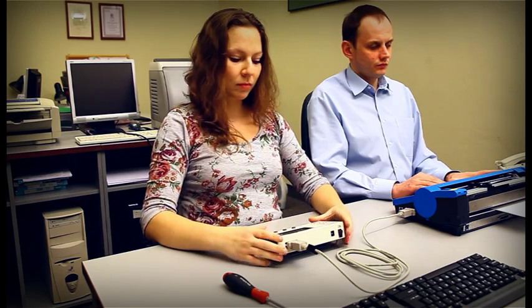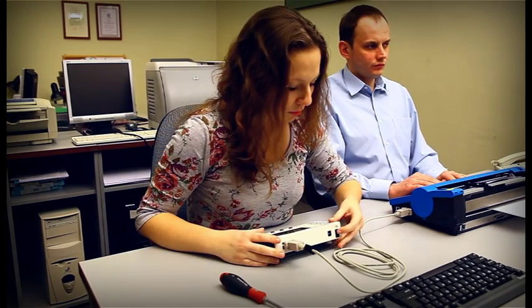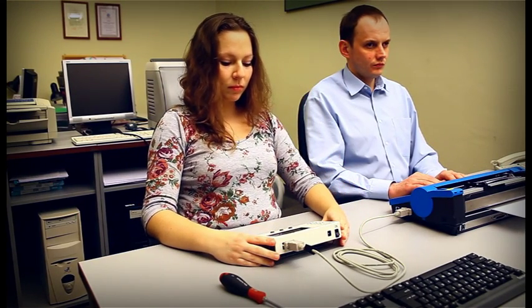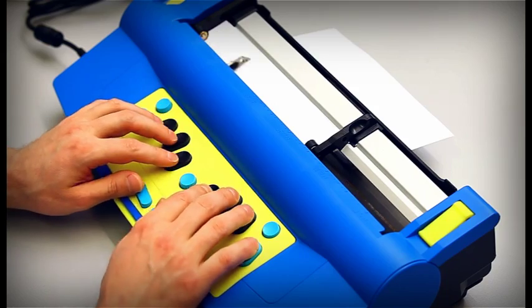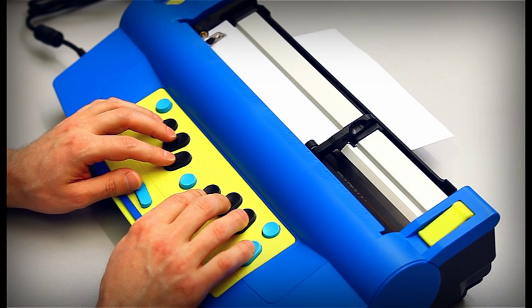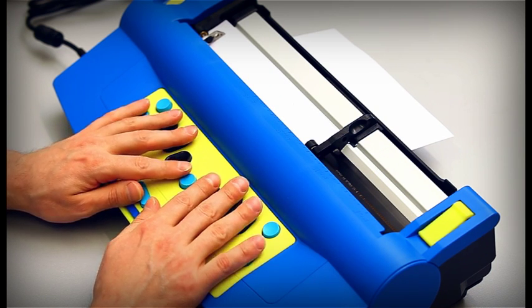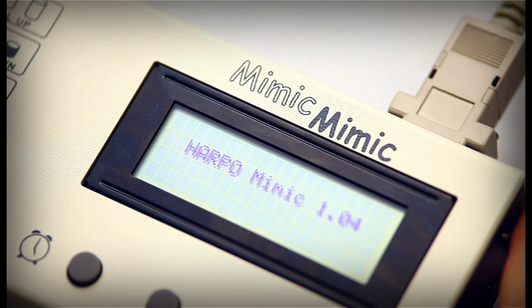Make sure you switch the Mimic on before you turn your Mountbatten on. Otherwise, you may receive an error message from the Mountbatten. A blinking cursor will appear in the top left corner of the Mimic's screen.